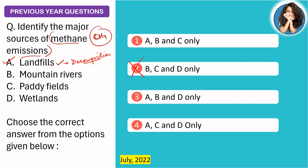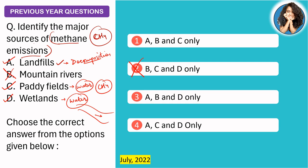The next question asks to identify the major sources of methane emissions. Landfills are a source because decomposition in landfills always produces methane. Mountain rivers can be cancelled. Paddy fields are a source because when paddy fields are filled with water during irrigation, methane is produced. Wetlands, where water does not flow freely, also produce methane.